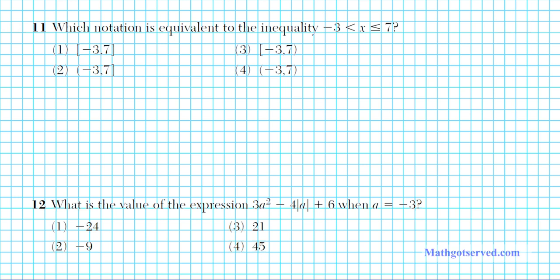Let's take a look at problem number 11. It says which notation is equivalent to the inequality negative 3 less than x and x less than or equal to 7. So let's go ahead and go over these notations real quick. We know that this is less than and this is greater than. These two do not include the end point that you're pointing to.